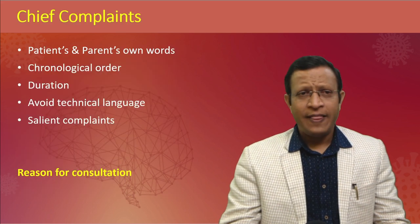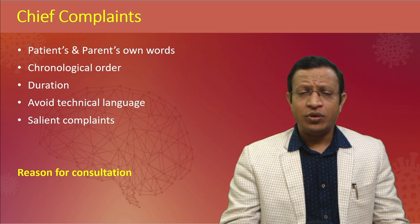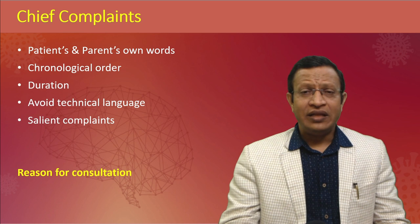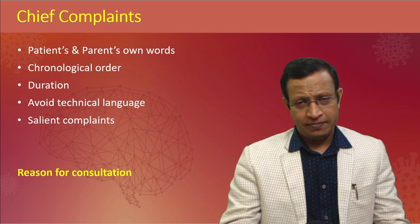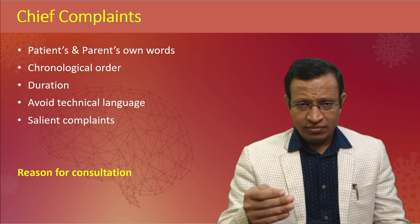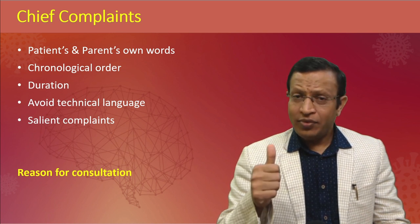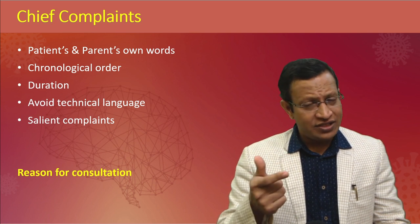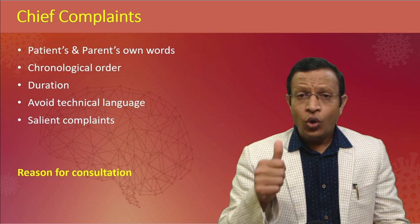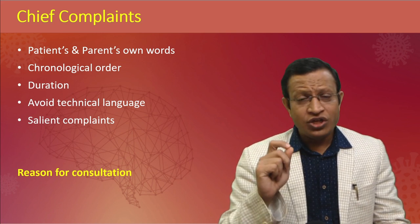For chief complaints and brief history, document symptoms in chronological order. Family members will usually describe behaviors in excess, but careful questioning may reveal withdrawn or deficit behaviors as well. Document what each informant has reported separately, using the family's own words rather than technical terms. Ask for what was the reason for consultation, who referred them, why they were referred, what the symptom was, what was the need for referral, and why the referral is happening now.